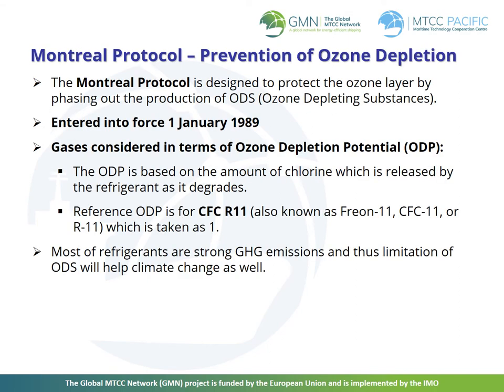The Montreal Protocol. The prevention of ozone depletion. The Montreal Protocol is designed to protect the ozone layer by phasing out the production of substances known as ODS — ozone depleting substances. It entered into force on January 1st, 1989. The ODP (ozone depletion potential) is based on the amount of chlorine released by the refrigerant as it degrades. The reference ODP is for CFC R11 (also known as Freon 11), which is taken as one. Most refrigerants are strong GHG emittants and thus limitation of ODS will also help climate change.